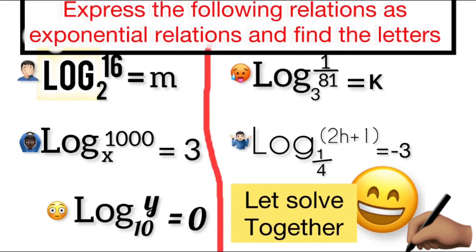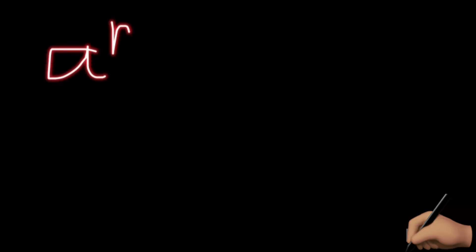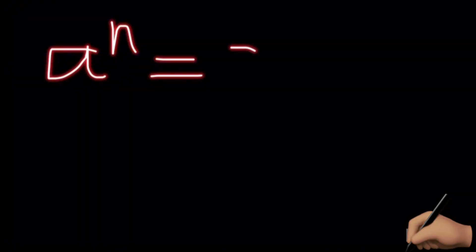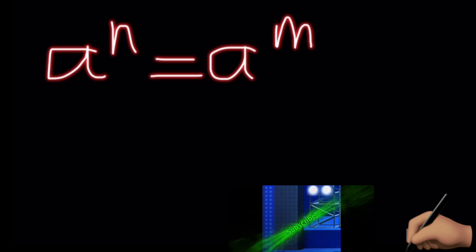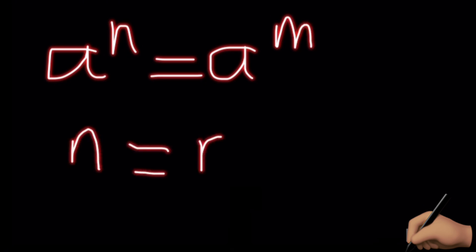We have to explain the following relations as exponential relations and find the matrices. Questions like this are very confusing, so in this video I'm going to show you some ways you can use to solve them. Let's go back to indices: when a exponent n is equal to a exponent n, since the bases are the same, we say that the exponents are also the same, so n is equal to n. This is the concept you are going to apply here.